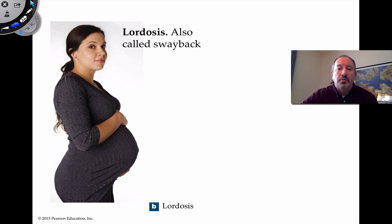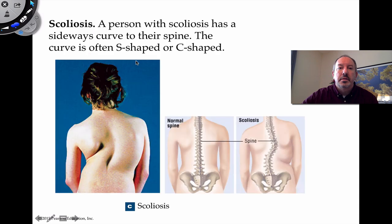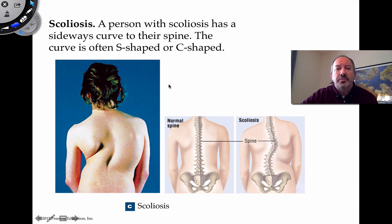Another type of abnormal spinal curve is lordosis, called sway back, where the spine curves significantly inward in the lower back or lumbar area. And perhaps most famously, scoliosis — a person with scoliosis has a sideways look to their spine, which is either S-shaped or C-shaped.